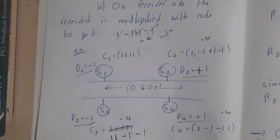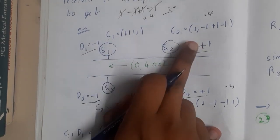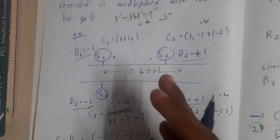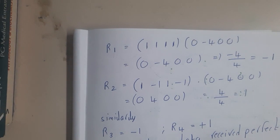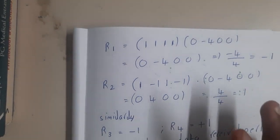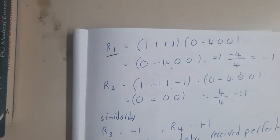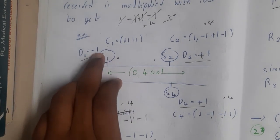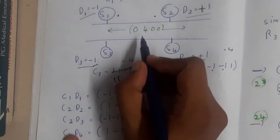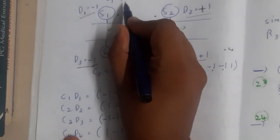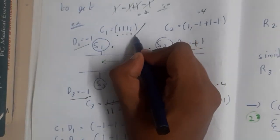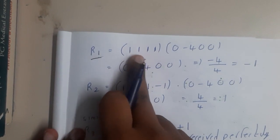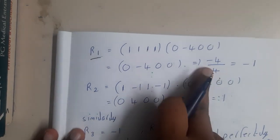Now for decoding: assume we are sending data from S1 to S2. To decode, the receiver takes the received data and multiplies it by their own code, then divides by the number of stations. For example, if S4 receives [0, 4, 0, 0], S4 takes its own code [1,1,1,1], multiplies element-wise, and divides by 4 to get the result: -1. So S4 recovers its data -1.